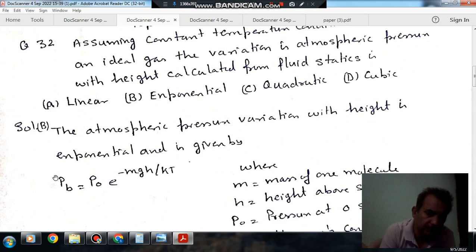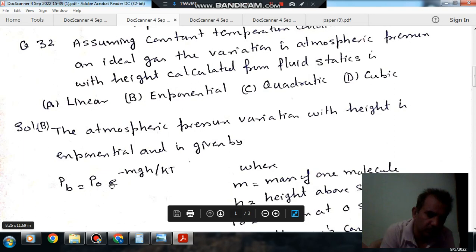So, the pressure variation of atmospheric pressure is given by Pb equals P0 e to the power minus mgh by kT.